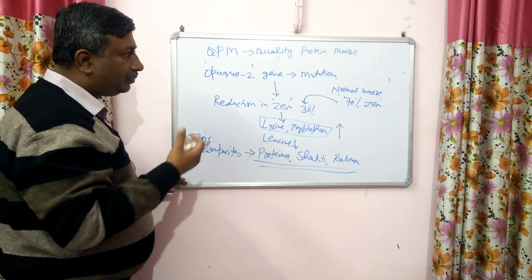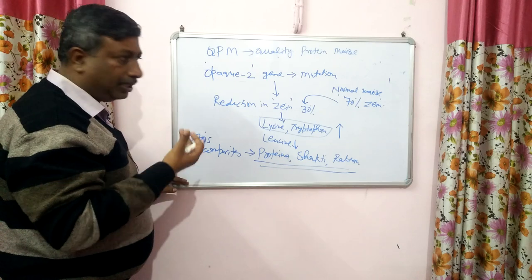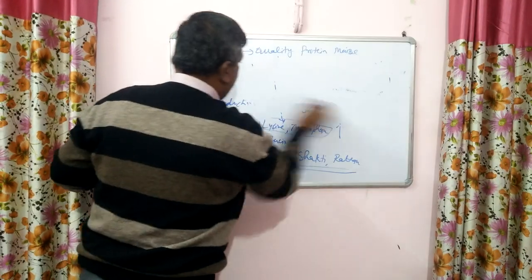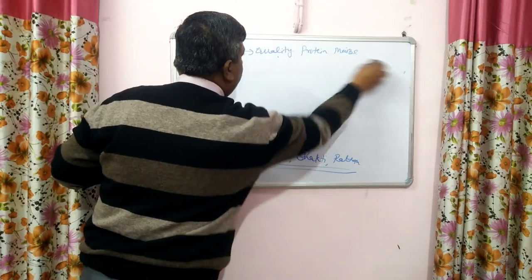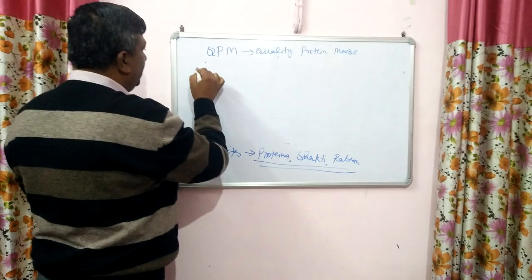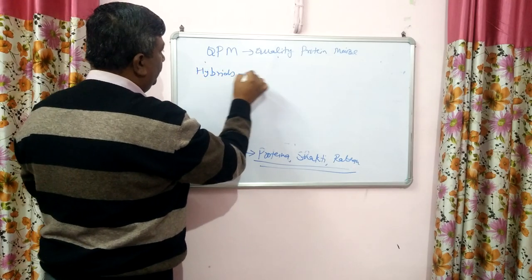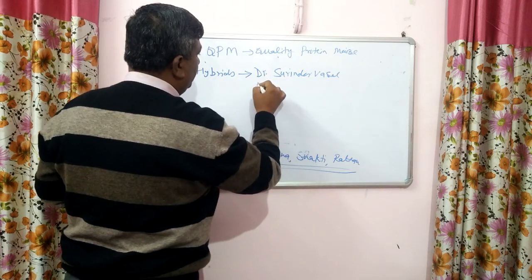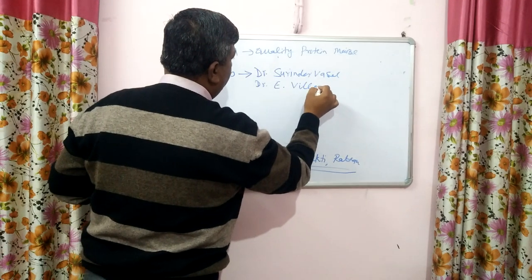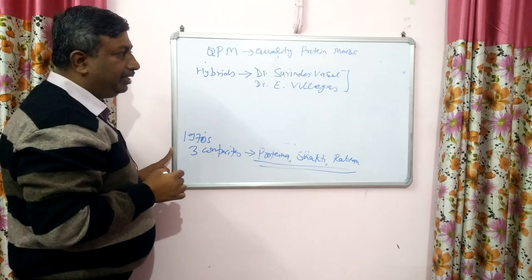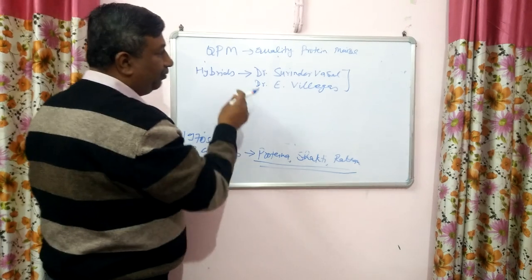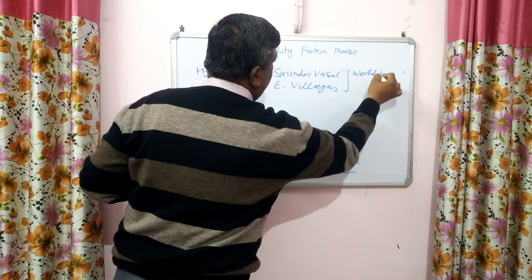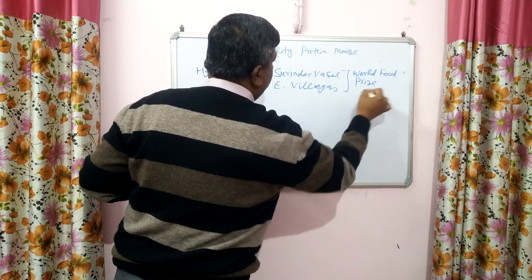So work began on developing QPM hybrids. The QPM hybrids were developed in the 1990s. Two scientists responsible for the development of QPM hybrids were Dr. Surinder Basal, who is Indian, and Dr. E. Willi Gauze, who was from Mexico. They developed the QPM hybrids in the late 1990s.